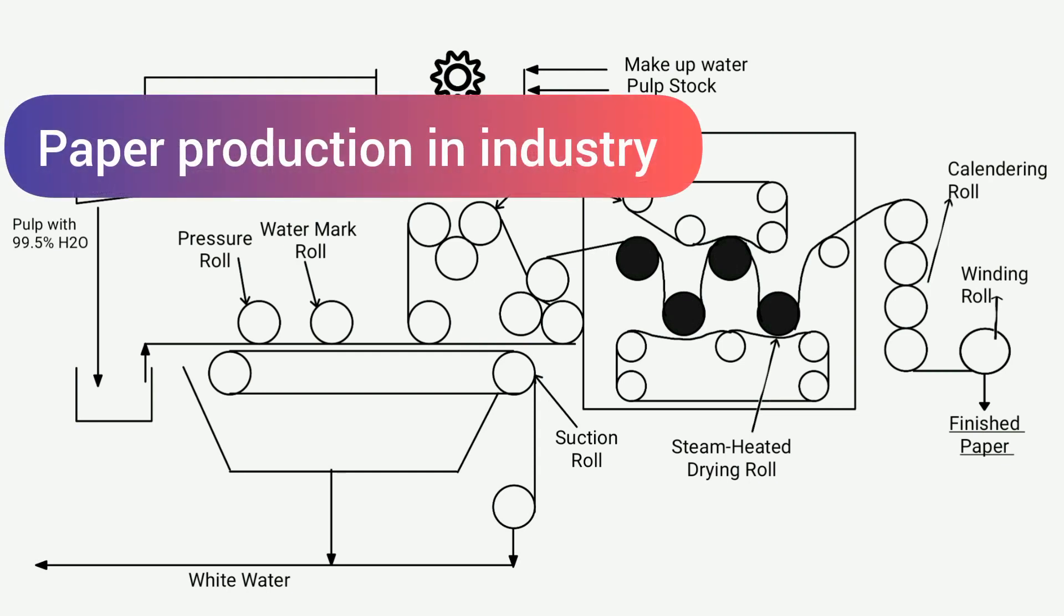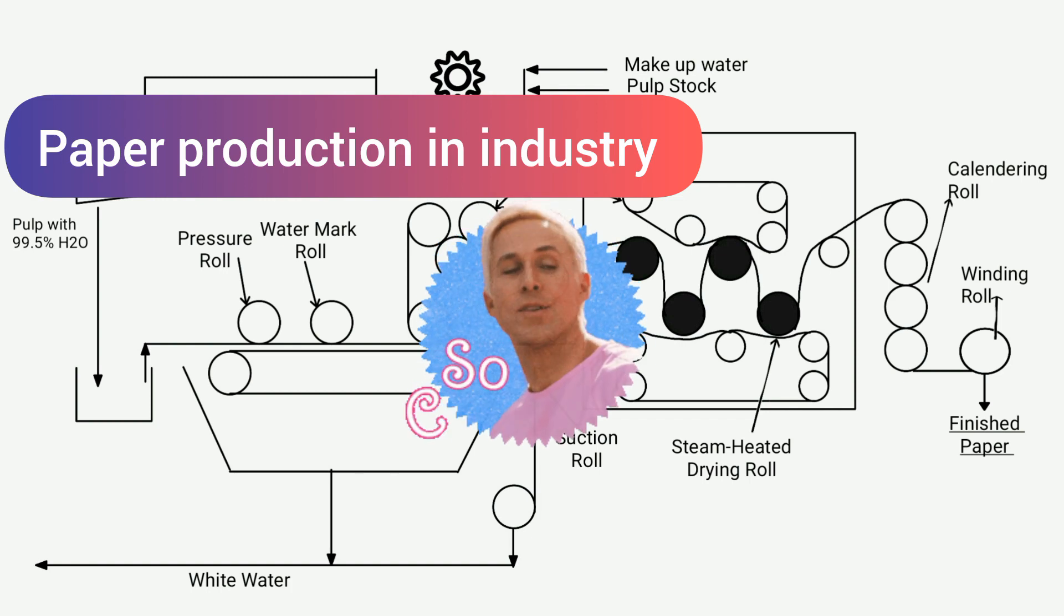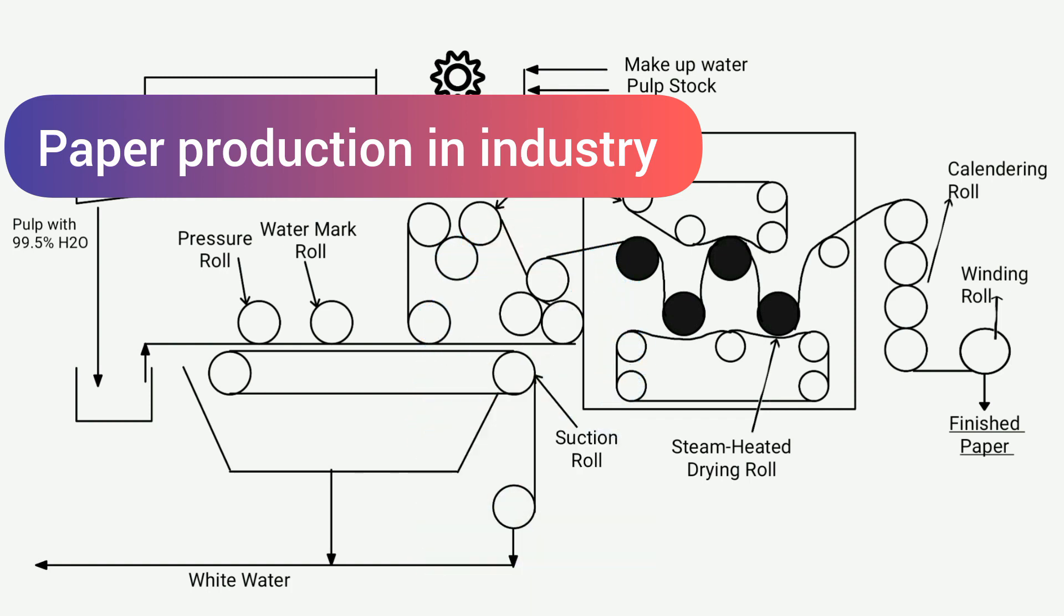Welcome, today's topic is how paper is manufactured in the industry. If you are a student of chemical engineering, then this topic is important for you. In today's video, we will understand how paper is manufactured from pulp through a flow sheet diagram. Let's get started.